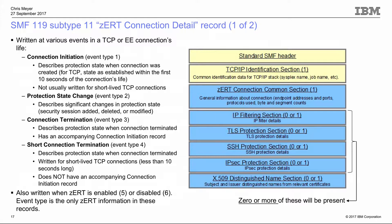We also write two bookmark records: one when zERT is enabled, and one if zERT is ever disabled. If you're looking at your SMF stream and wondering why you suddenly don't have any subtype 11 or subtype 12 records, those bookmarks tell you why. A connection can be protected by zero or more security sessions, so you'll have zero or more protocol-specific records in your subtype 11 — if you've got both TLS and IPsec, you'll have both sections.